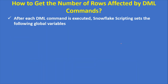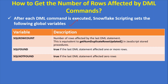After each DML command is executed, Snowflake Scripting sets the following three global variables. The first one is SQLROWCOUNT — the number of rows affected by the last DML statement. Please note that if you have more than one DML statement in your procedure, then SQLROWCOUNT returns the count for the last DML statement. This is equivalent to GET_NUM_DUPLICATE_ROWS_UPDATED in JavaScript stored procedures.